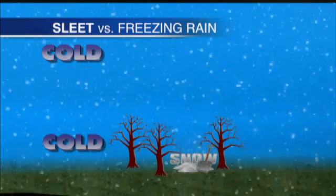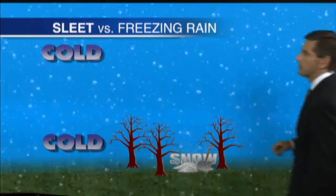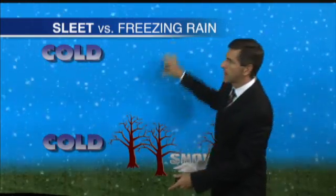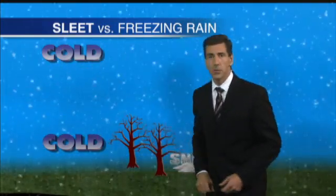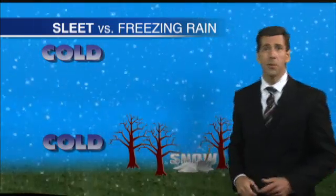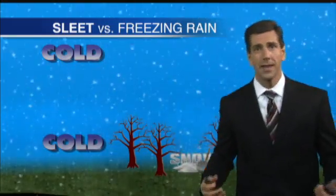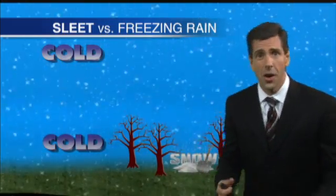Snow is an obvious one — that's when the atmosphere is below freezing from top to bottom. So when precipitation forms in an atmosphere like that, we get snow.